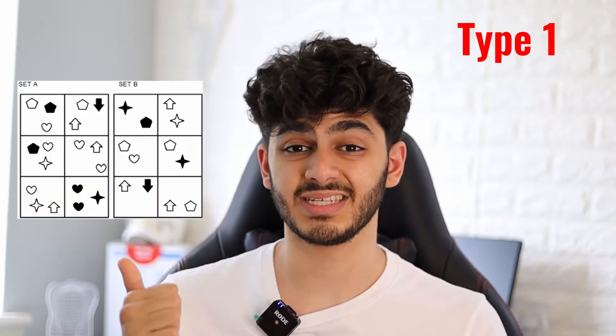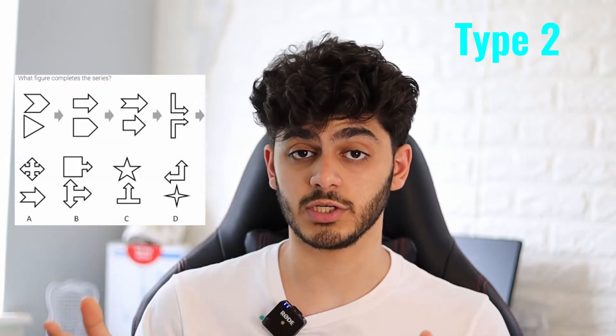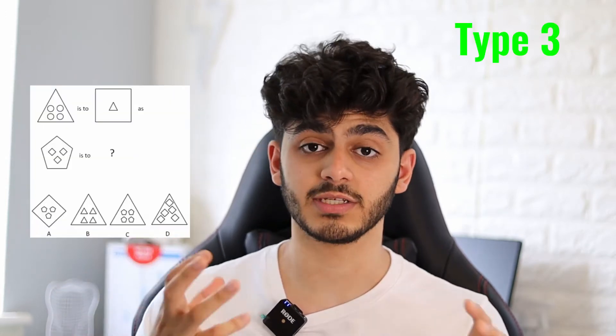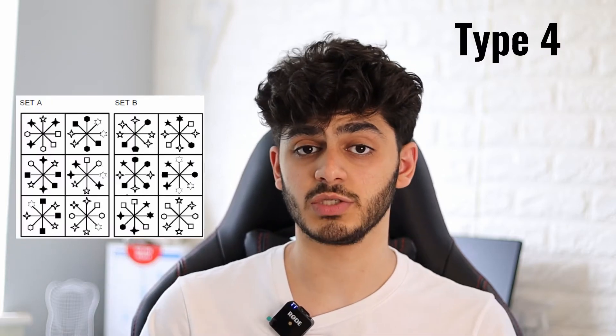The abstract reasoning section is one that a lot of people hate because it's just quite odd. It's important to note that it has four different types of questions. Type 1 questions are known as the Set A, Set B or Neither questions. Type 2 are series questions. Type 3 are the statement analogy questions. Type 4 is similar to Type 1 but is kind of like a best fit. I'll go through some examples now to help explain what the different types are.